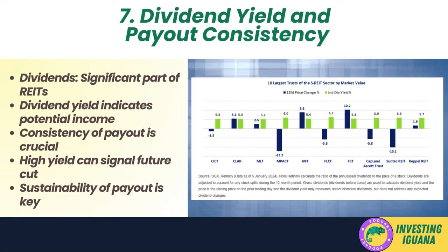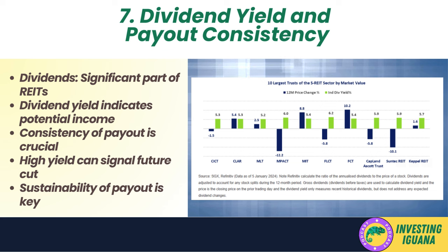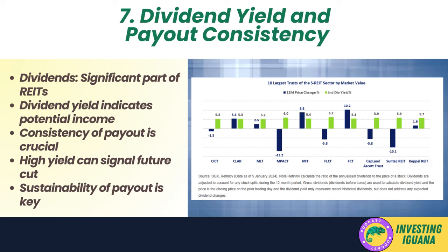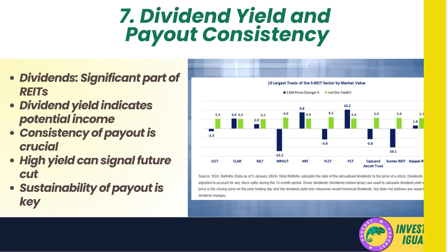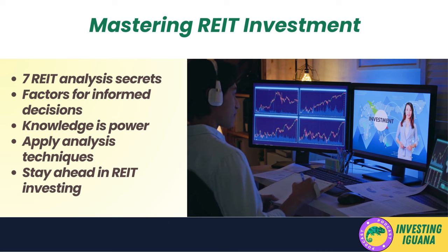However, dividend yield is not the only factor to consider — the consistency of dividend payouts is equally important. A REIT with a history of consistently paying or growing its dividend can be a sign of a stable and profitable investment, suggesting a reliable income stream from long-term lease agreements and effective expense management. On the other hand, while a high dividend yield can be attractive, it's important to be cautious of unusually high yields — this could signal that the market expects the dividend to be cut, likely leading to a share price drop, or that the REIT is paying out more than it can sustainably afford.